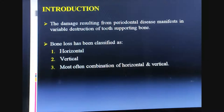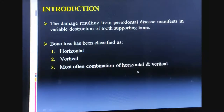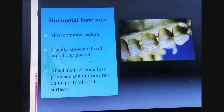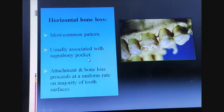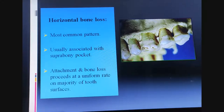As the disease progresses or becomes severe, the ultimate result is destruction of the supporting alveolar bone. The most common pattern of destruction can be horizontal, vertical, or most often a combination of both. Horizontal bone loss is the most common pattern and is usually associated with suprabony pockets. There are two types of pockets: suprabony pockets and infrabony pockets.